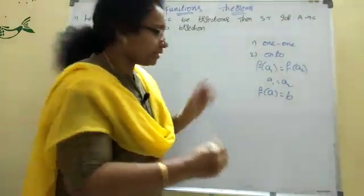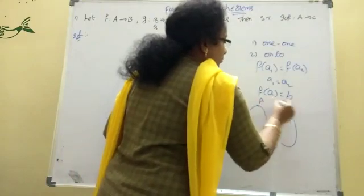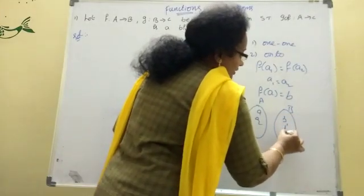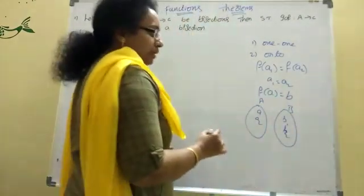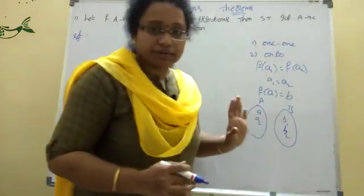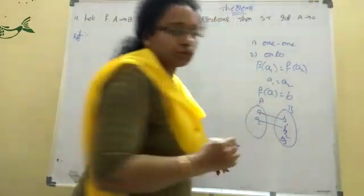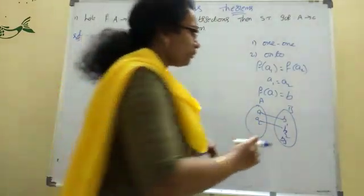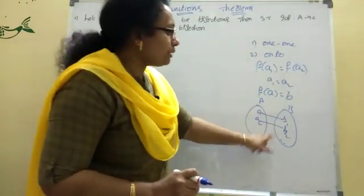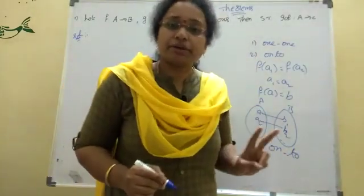F of A is equal to B. If F of A1 is equal to B, which means A2 means an image — the image produces it. If A1 equals A2, then we will get onto. This is onto function. One-one and onto — this function is bijection.